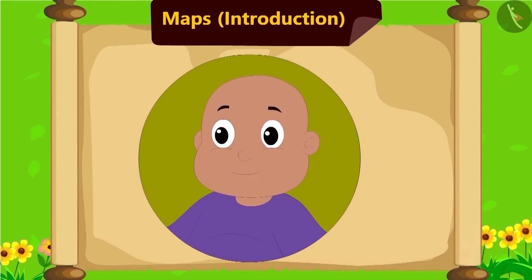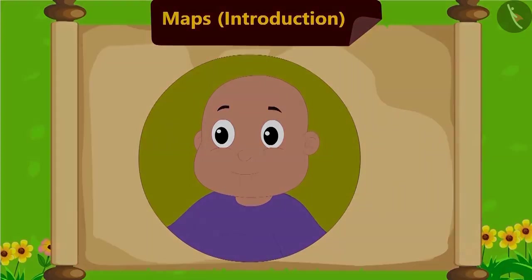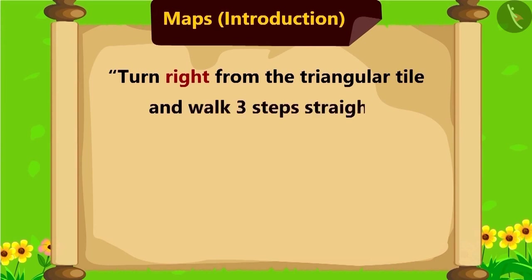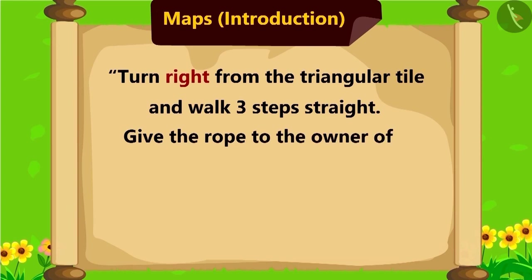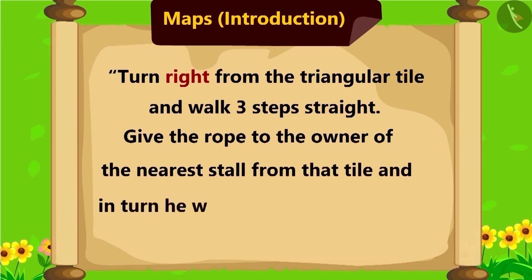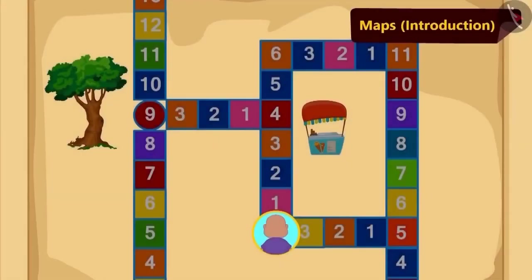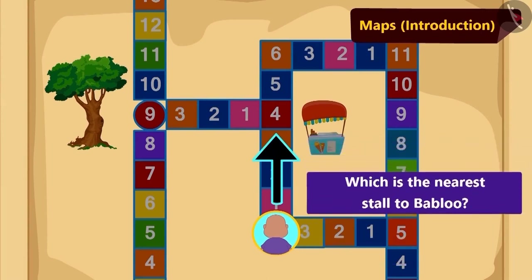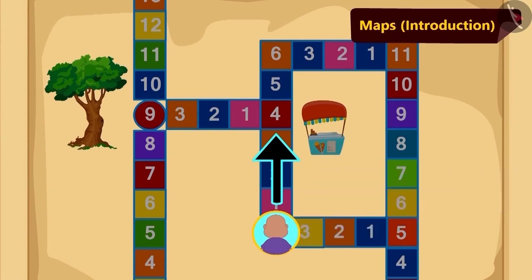Bablu further read the instructions: turn right from the triangular tile and walk straight three steps. The stall which is nearest to the tile — give the rope to the owner of that stall, and in turn he will give you a new object. Children, can you tell which is the nearest stall to Bablu after he walks three steps further?